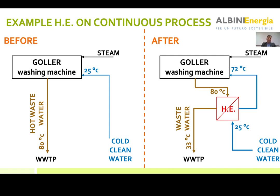The machine was discharging at 80 degrees and the cold clean water entering the heat exchanger was at 25 degrees. In order to reach the temperature required by the recipe, they used to rely on normal steam. After the heat exchanger installation, the washing machine discharge was still 80 degrees, but by using the heat exchanger, this temperature dropped to 33 degrees before going to wastewater treatment, and the fresh water was raised from 25 degrees to 72 degrees.